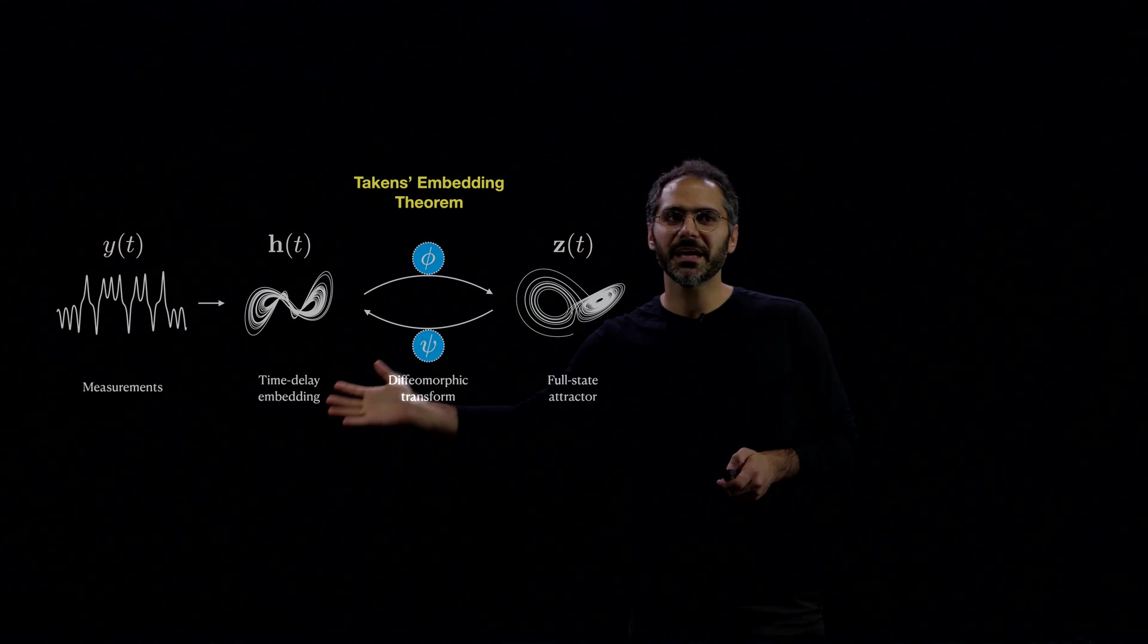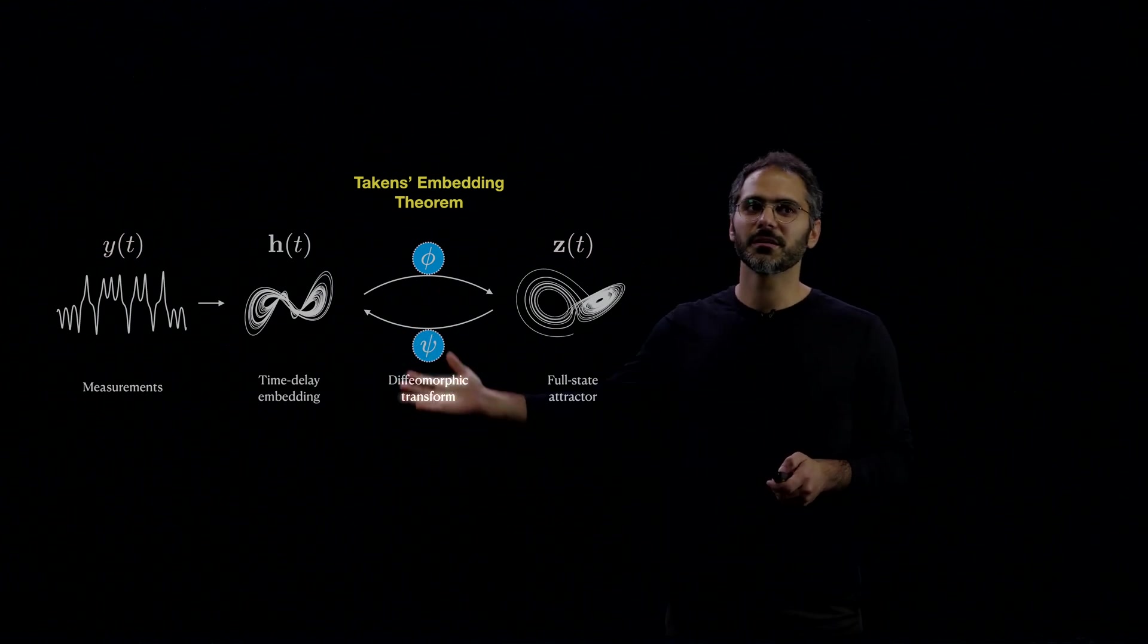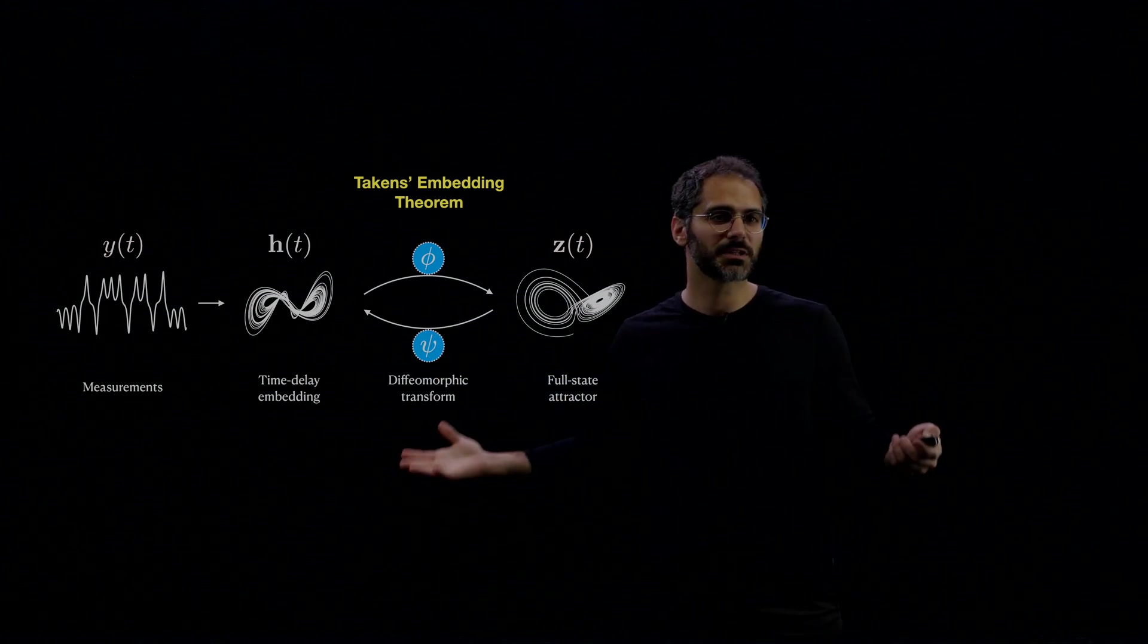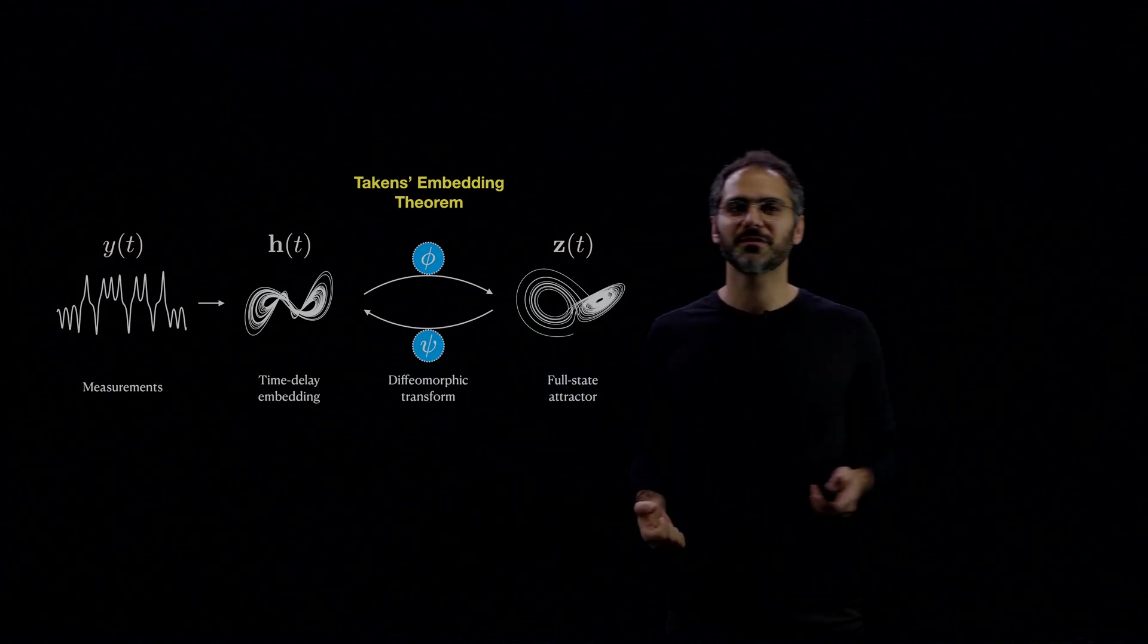And we know that we can go from h to z back and forth using an invertible function, phi and psi, some non-linear continuous function.